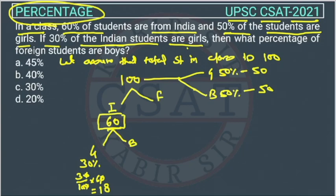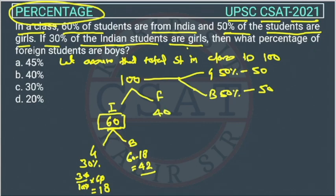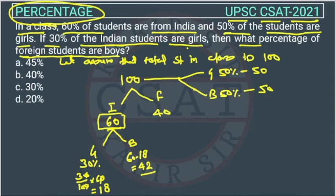So Indian boys will be 60 minus 18, which is 42. So 42 are Indian boys and 18 are Indian girls. Now we have to find what percentage of the foreign students are boys. There are 40 foreign students in total.